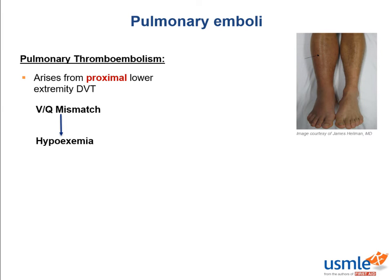The lung's response to hypoxemia is hyperventilation: by means of the peripheral chemoreceptors sensing the hypoxemia, hyperventilation occurs. The remaining normal lung increases ventilation in an attempt to compensate, blowing off large amounts of carbon dioxide. On an arterial blood gas, or ABG, this produces a picture of respiratory alkalosis.